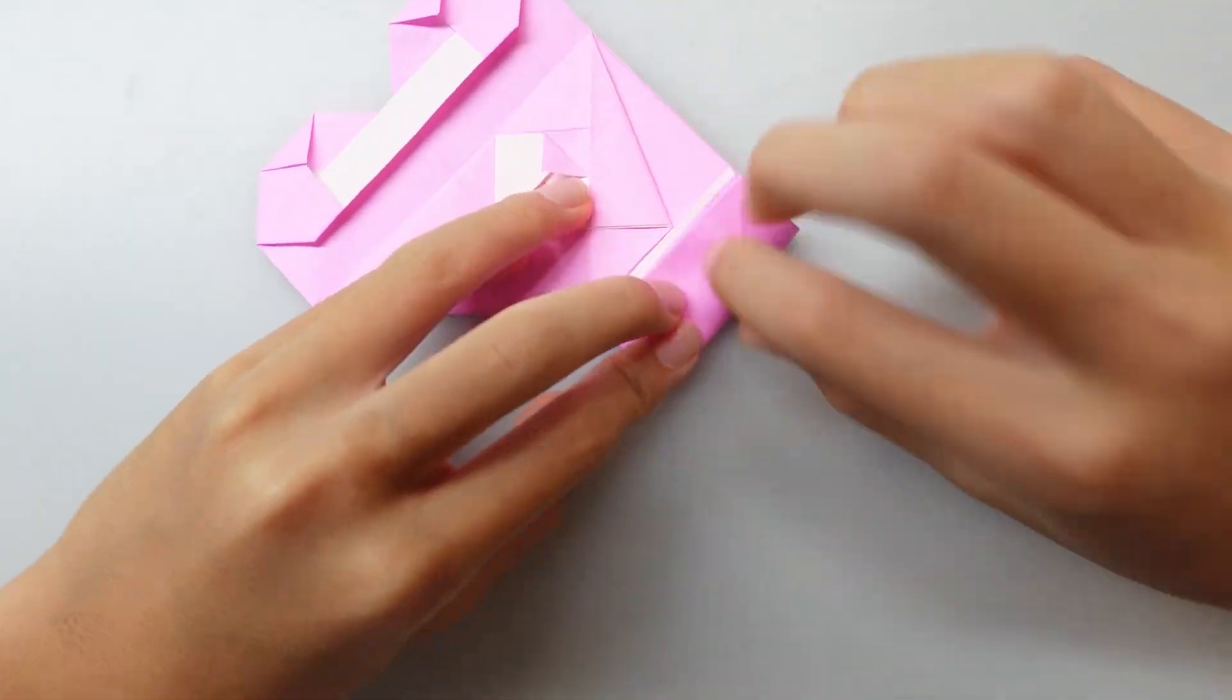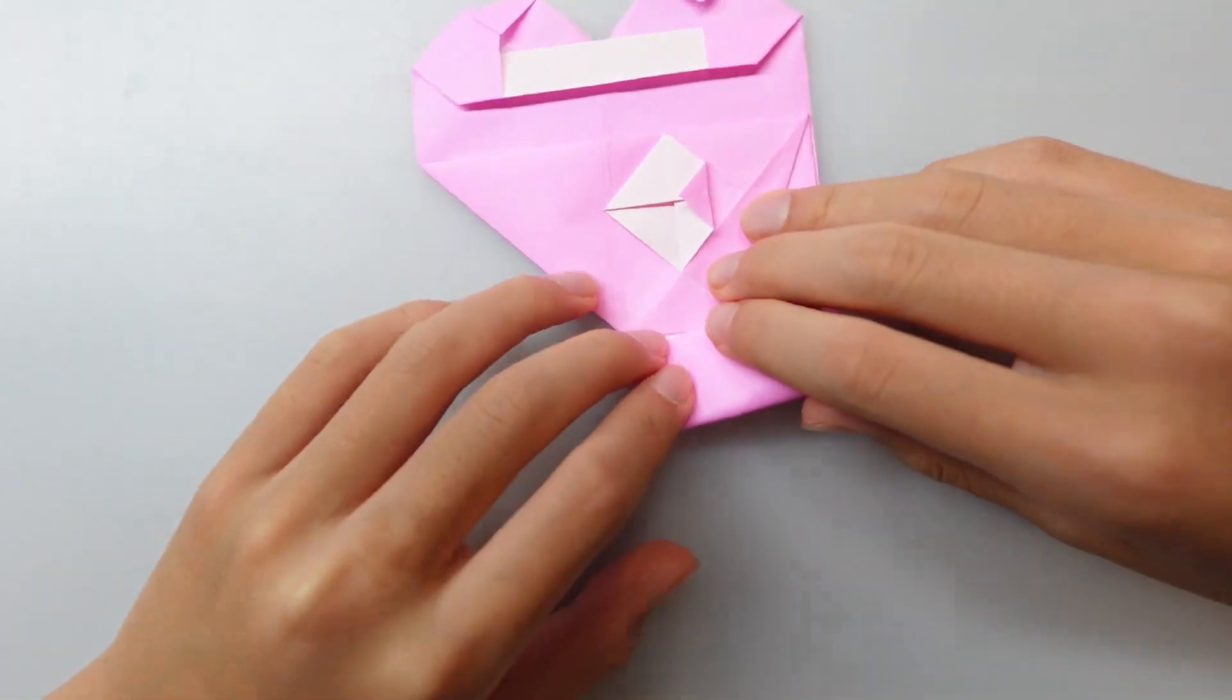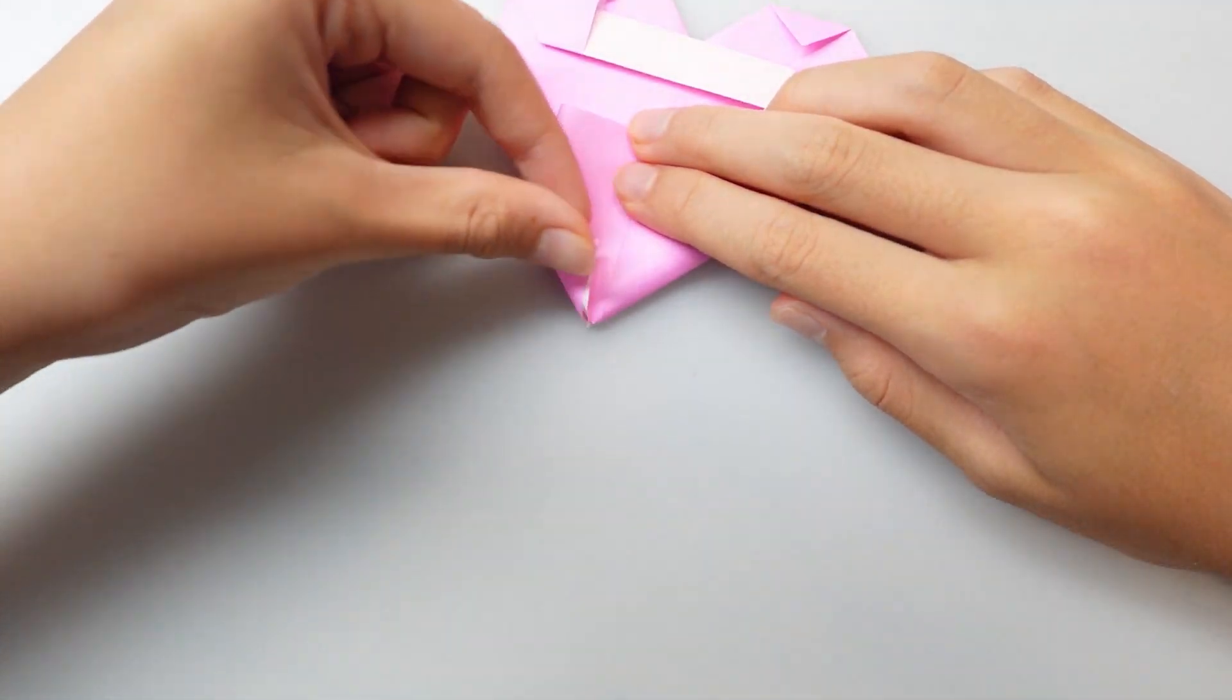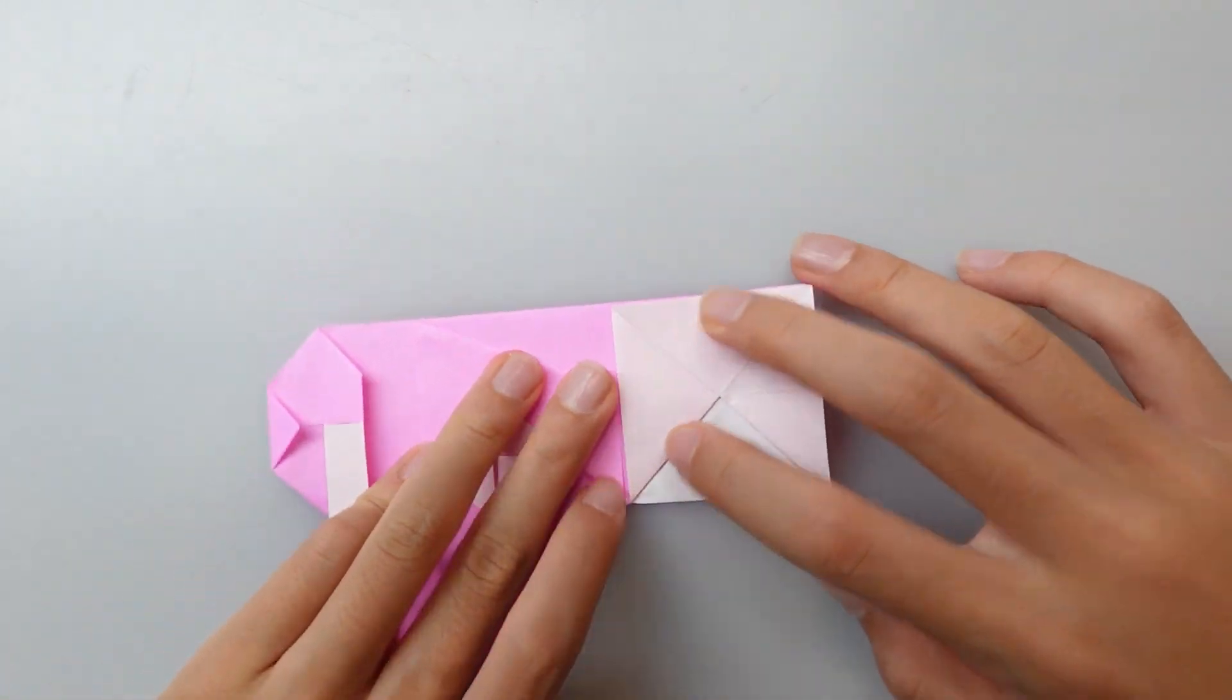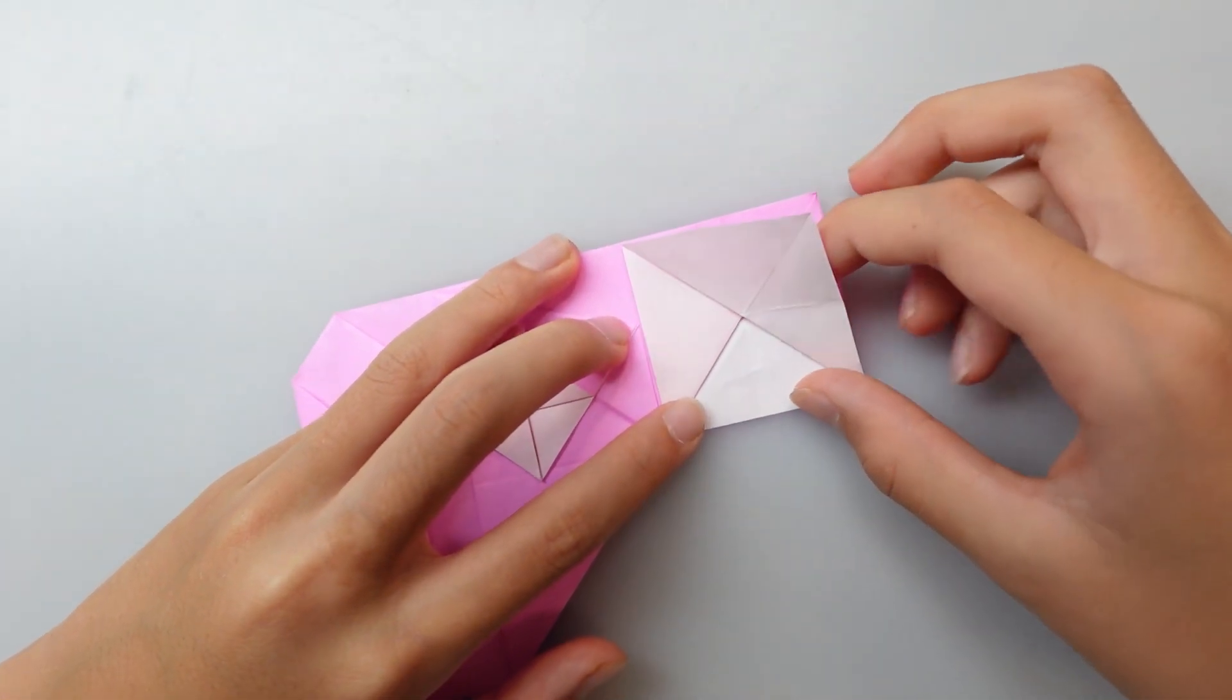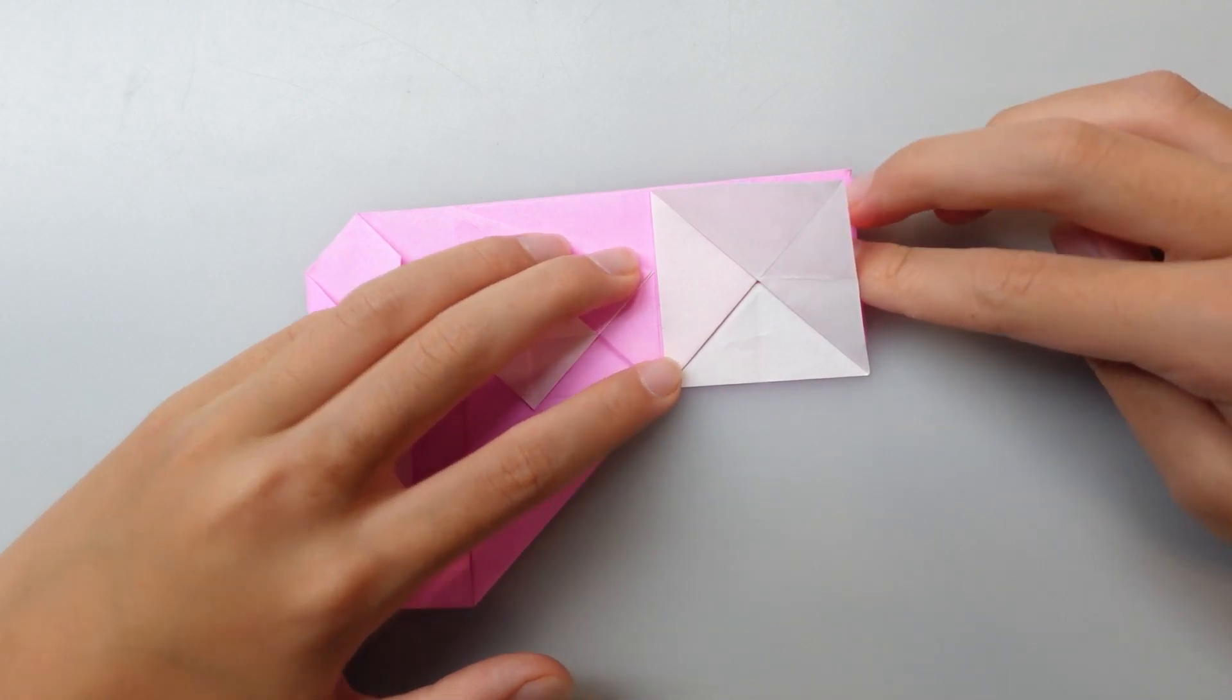But if you like it this way, fold up, fold this way, and then fold the corner up. But if you want the U, then let's continue. Take a deep breath. Say I can do it.